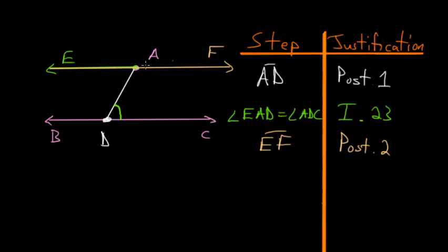Notice that line EF and BC share alternate angles, and we know from Book 1, Proposition 27 that if two lines have equal alternate angles, then these two lines are parallel.